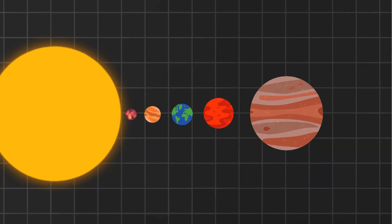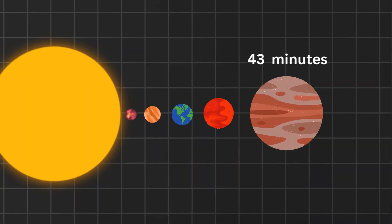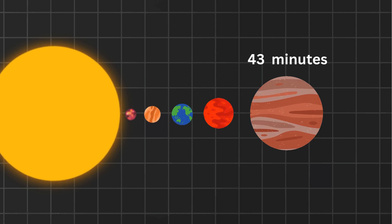Now we're getting far. Sunlight takes 43 minutes to reach Jupiter. If you could text someone there, they'd get your message almost an hour late. Blame the space Wi-Fi.